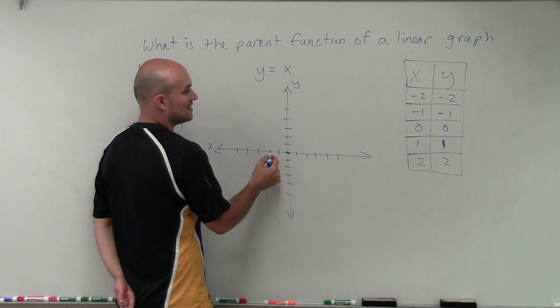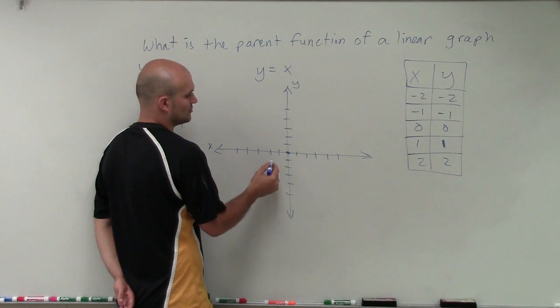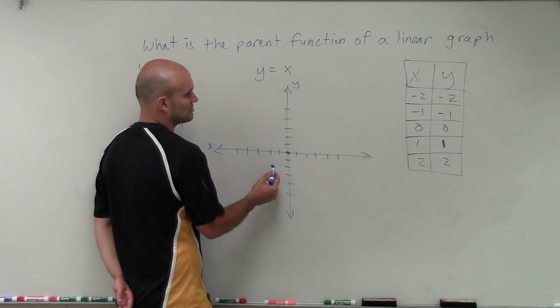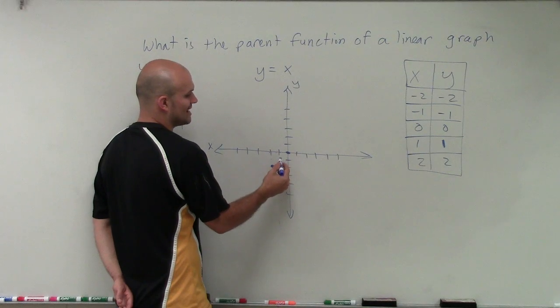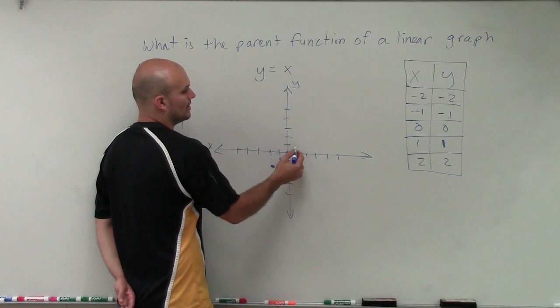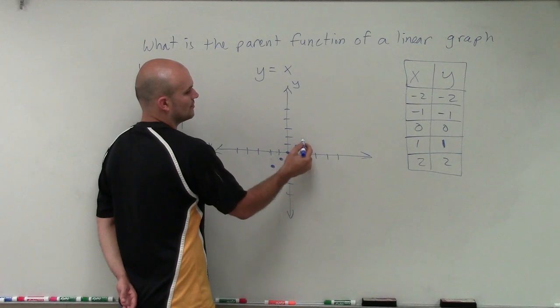I go negative 2, and then the y value is down 2, which will be negative 2 as well. That would be my first point. Then I go negative 1, down 1, 0, 0, over 1, up 1, over 2, up 2.